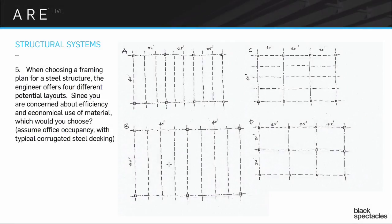Another framing plan concept here. So when choosing a framing plan, number five here, for a steel structure, the engineer offers four different potential layouts. Since you are concerned about efficiency and economical use of material, which would you choose? Assume it's an office with typical corrugated steel decking.